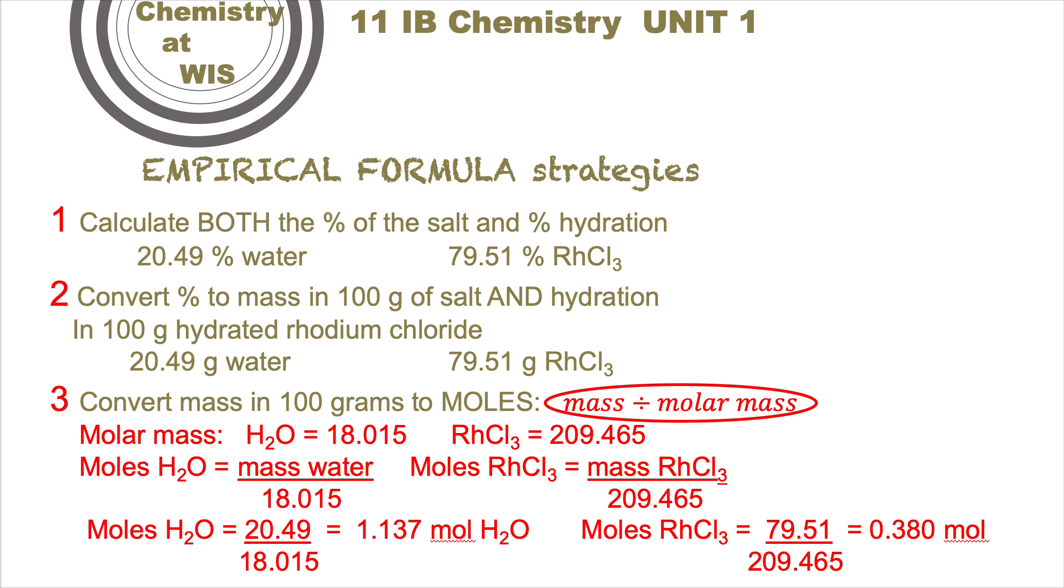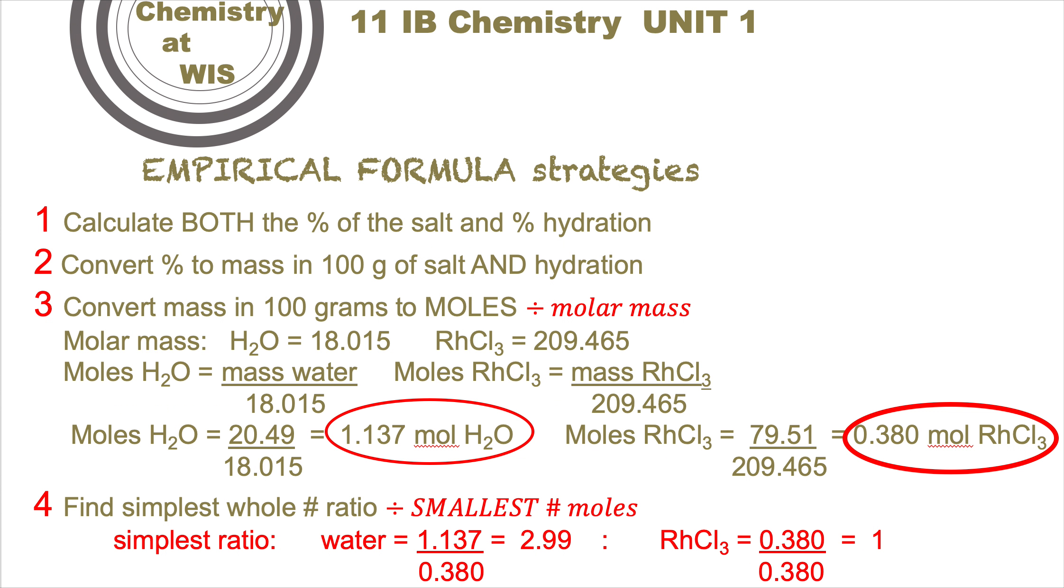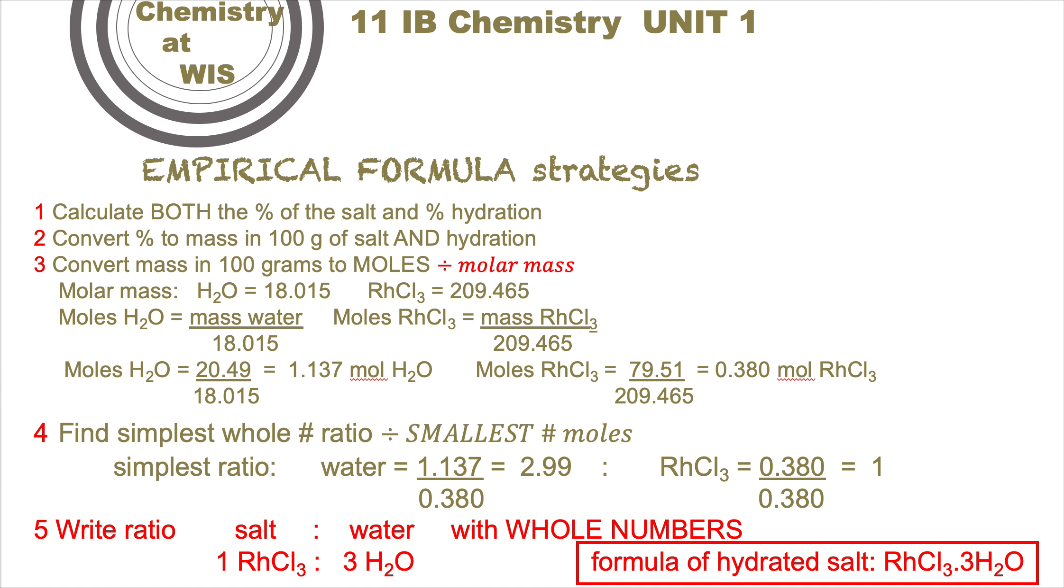Now we want the simplest whole number ratio. Out of the number of moles you've just calculated, divide by the smallest - that's the rhodium trichloride at 0.380. Divide both by 0.380, and you get for water a simplest ratio of 2.99 to 1. So you're going to round - the 2.99 rounds to three. Three moles of water to every one mole of rhodium(III) chloride. The formula is RhCl3.3H2O.